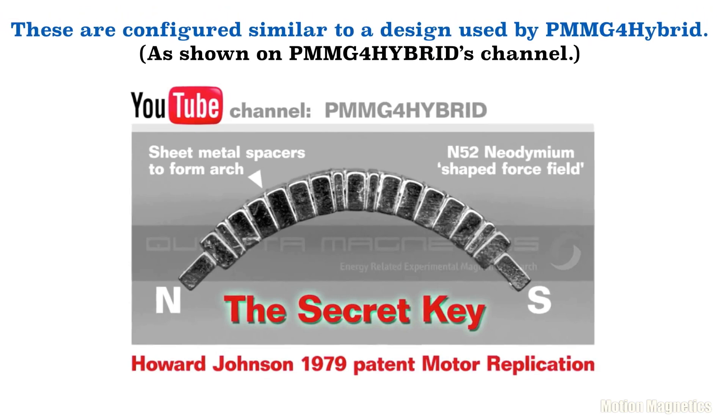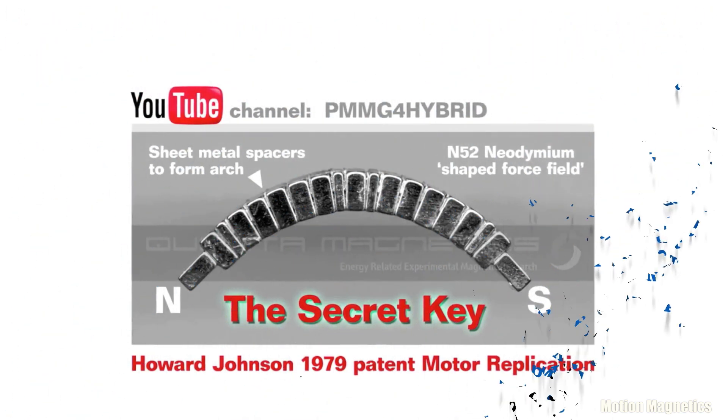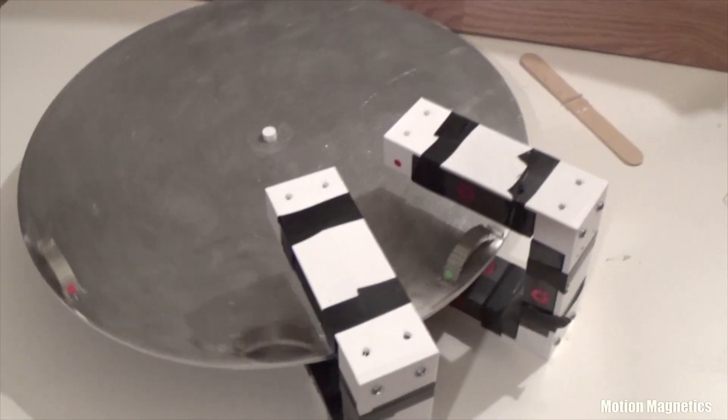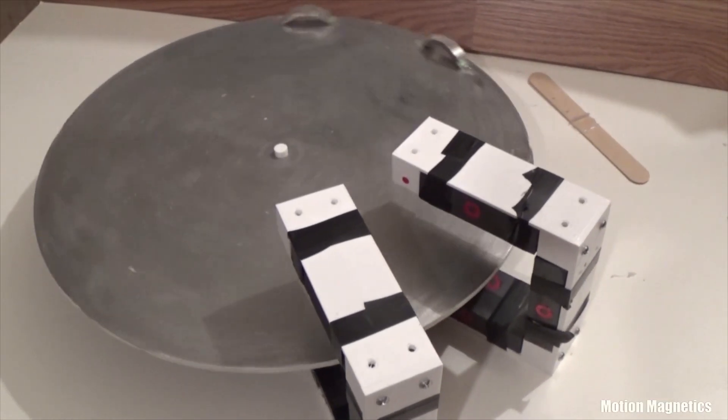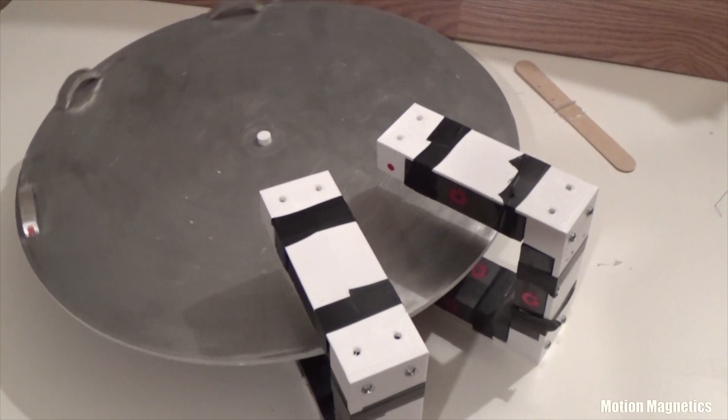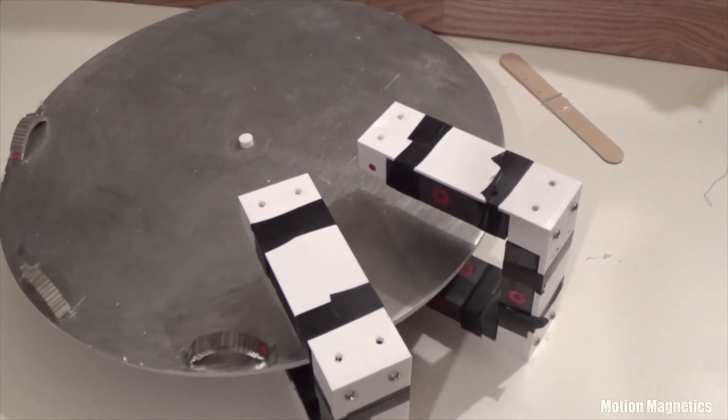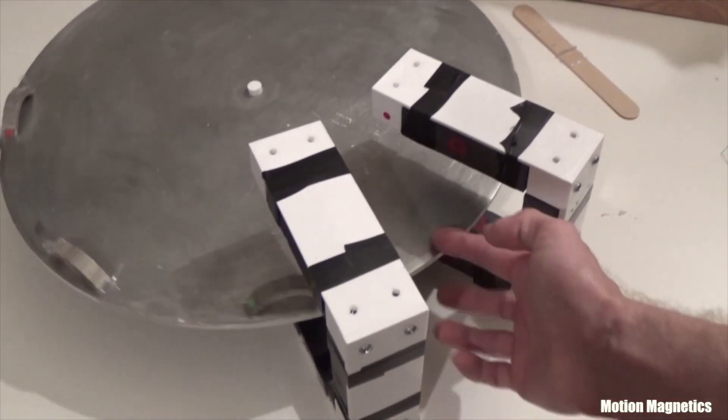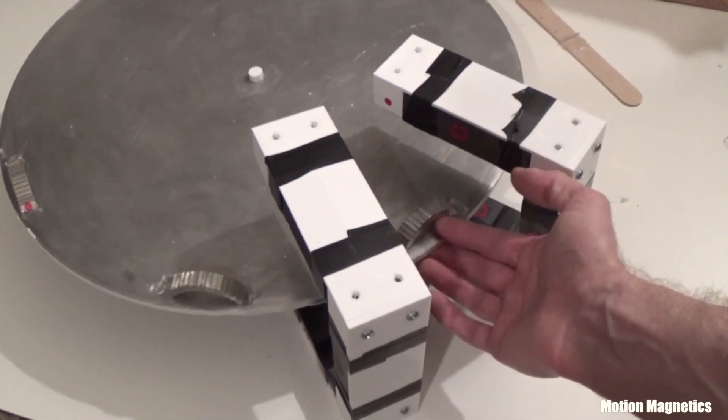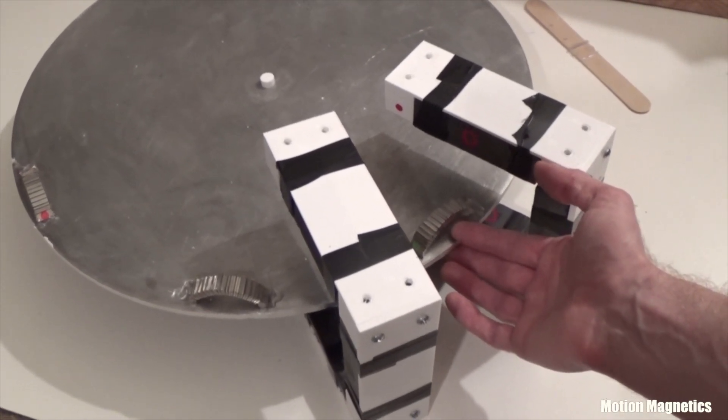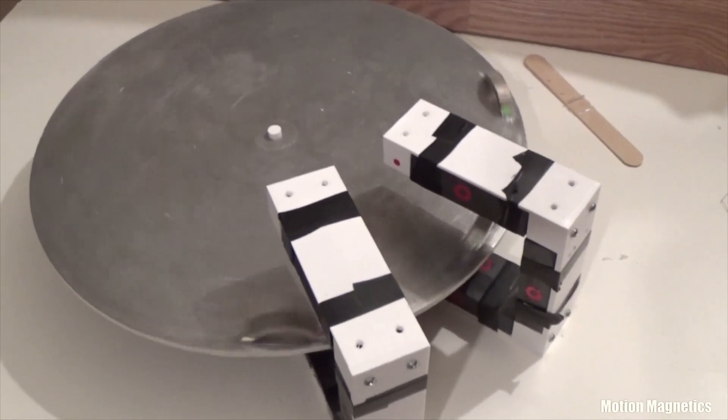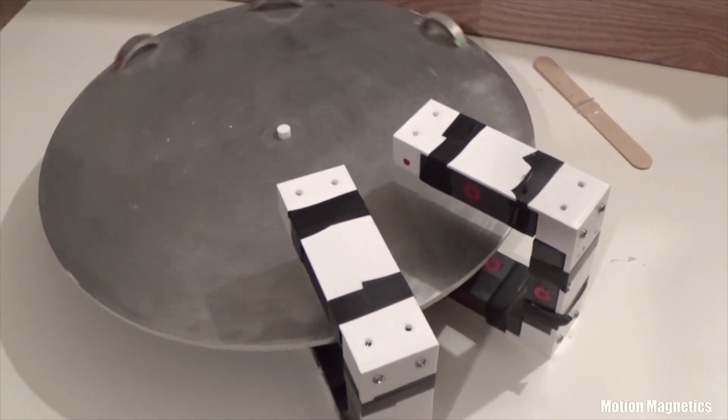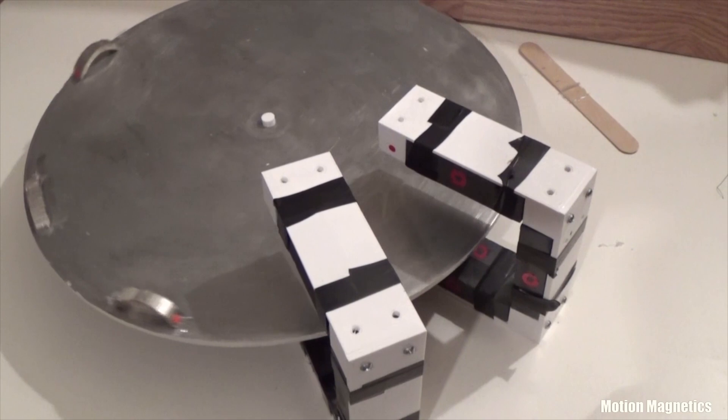If done properly, you could even tap into something called the exchange force pulse. This happens when a magnetic pulse suddenly flips for a fraction of a second and increases in intensity by four to five hundred times its normal strength. For a more in-depth explanation of this phenomenon, I'd highly recommend to read Howard Johnson's book, The Secret World of Magnets. Johnson is considered by many, including myself, to be the father of spintronics.